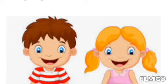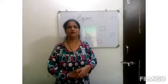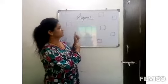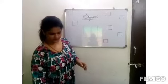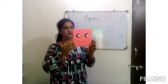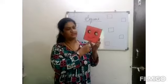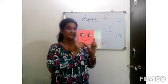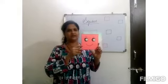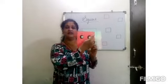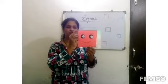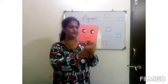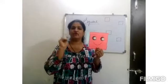Let's do some activity. Hi kids, today I am going to explain you square shape. Which shape is this? Square shape. Look at here. This is square shape. I have four corners and four sides. Let's count the corners and sides. One, two, three, four. How many corners? Four corners.